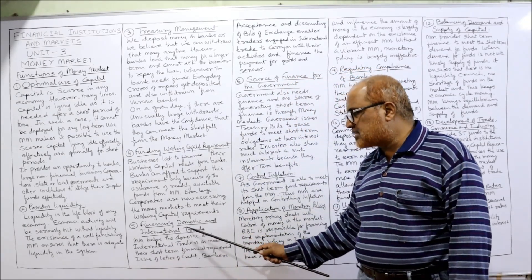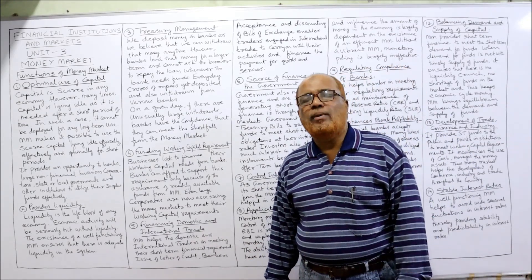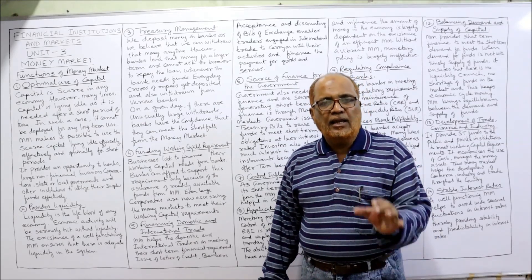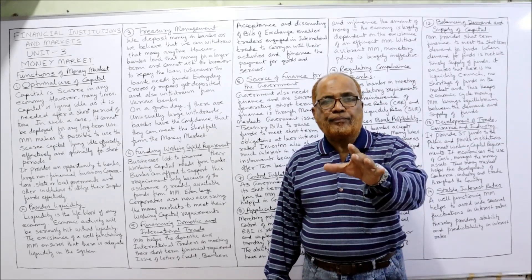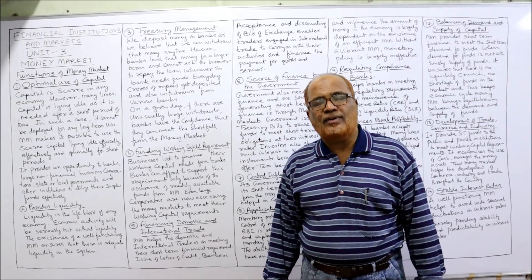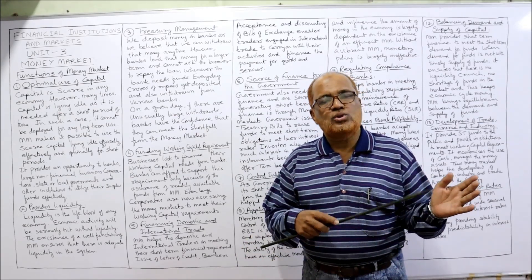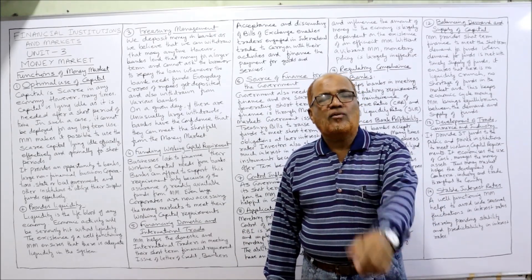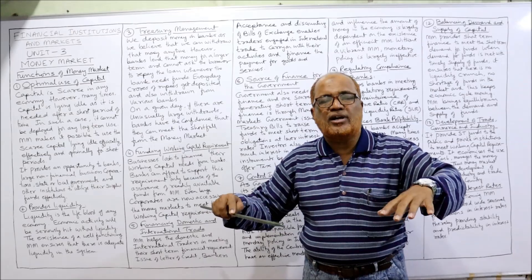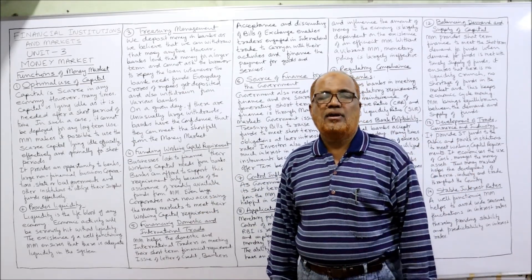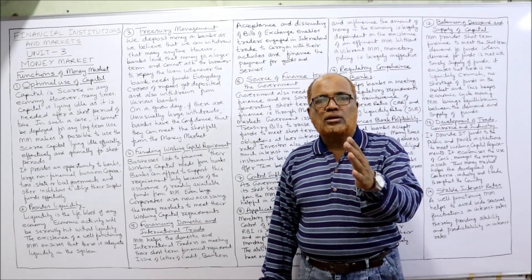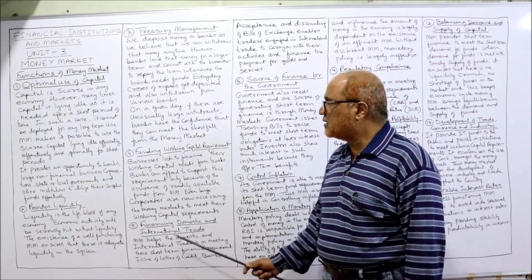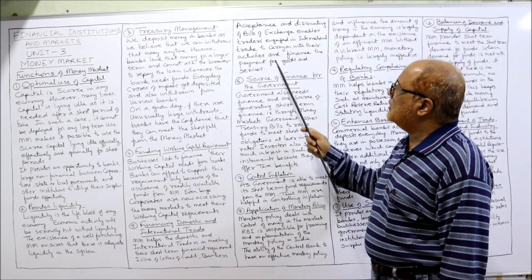The fifth function is financing domestic and international trade. Due to globalization, a lot of international trade is taking place. Traders require short-term funds for supplying or purchasing goods from abroad. Whether domestic traders or international traders, their short-term fund requirements are fulfilled by the money market through instruments such as acceptances.